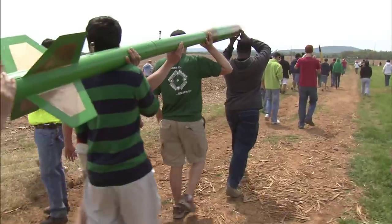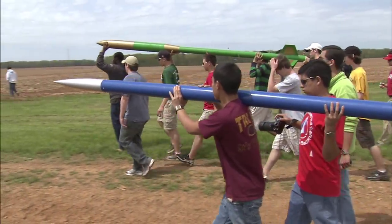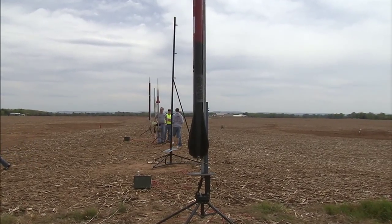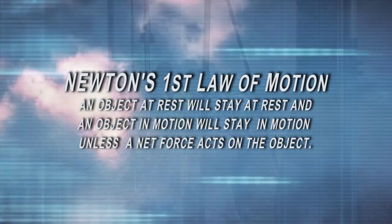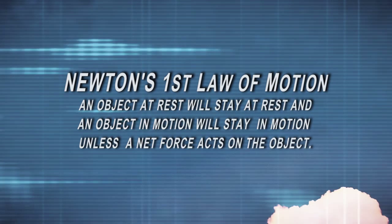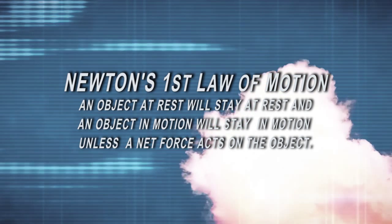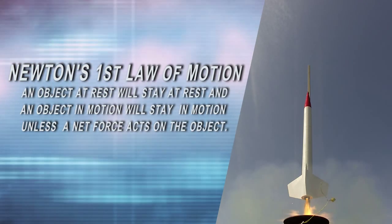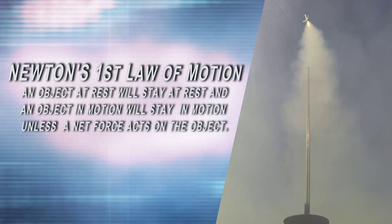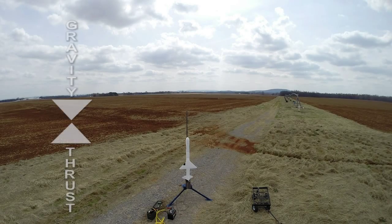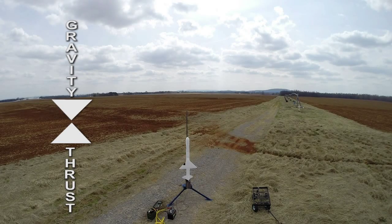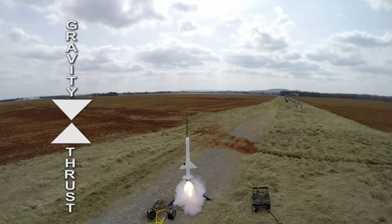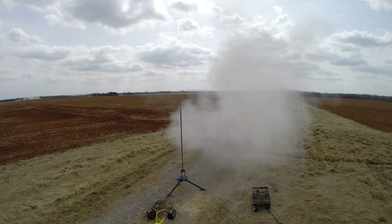The topics of propulsion and rocket motors provide opportunities to discuss several key scientific and mathematical principles. The most significant would be Newton's laws of motion. To review: an object at rest will stay at rest, and an object in motion will stay in motion unless a net force acts on the object. This law applies to rocketry throughout the entire flight, from resting on the launch pad to landing on the ground. As the rocket sits on the pad, there is no net force acting on the rocket — there are forces acting on it but they are equal. The force of gravity is pulling the rocket down and the normal force applied by the launch pad is pushing up. Once the motor is ignited, a chemical reaction takes place and the hot gases are expelled out of the nozzle of the rocket.